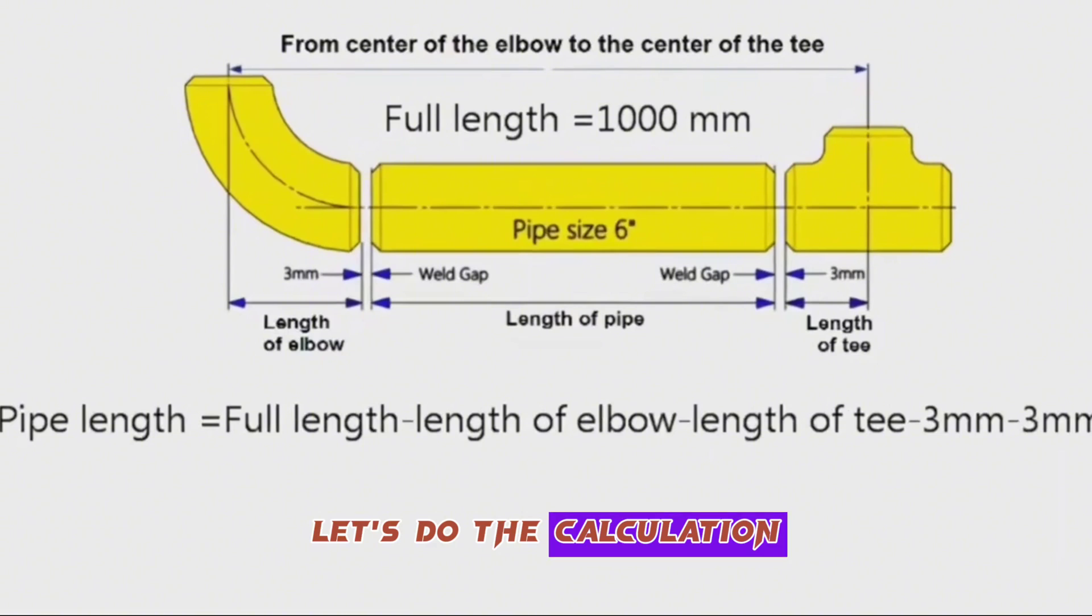Let's do the calculation on numbers. If we take the total length of the pipeline, that is, the distance from the center of the elbow to the center of the T, 1000 millimeters, then our calculation will be as follows.